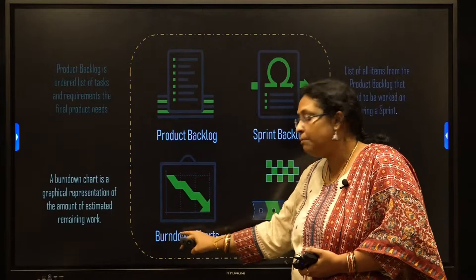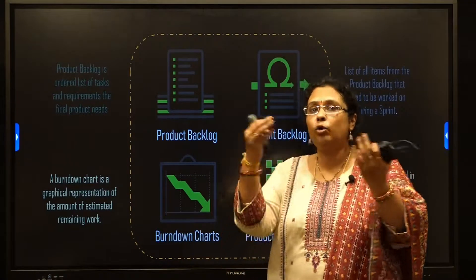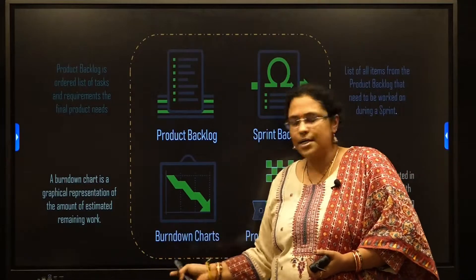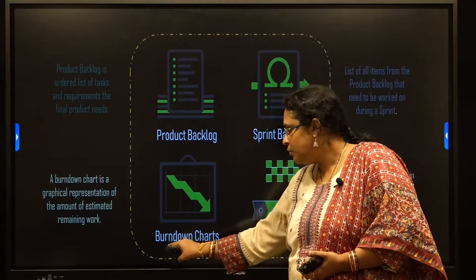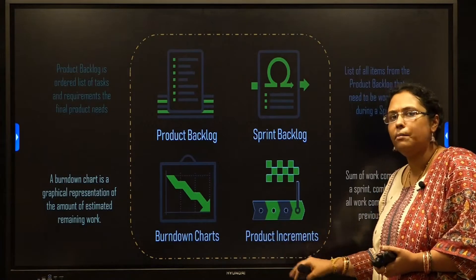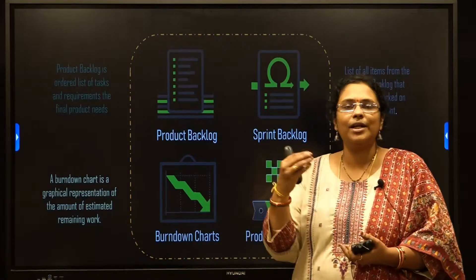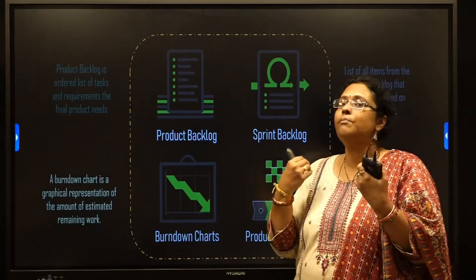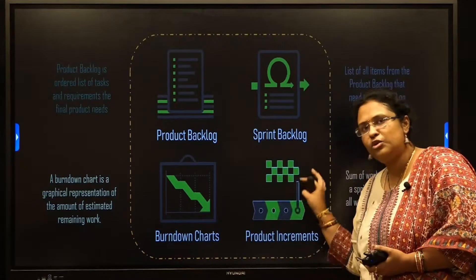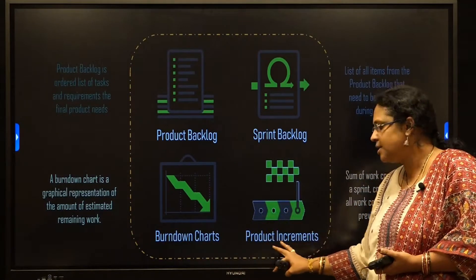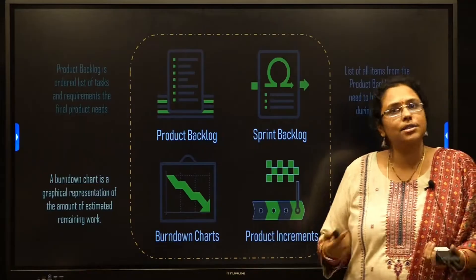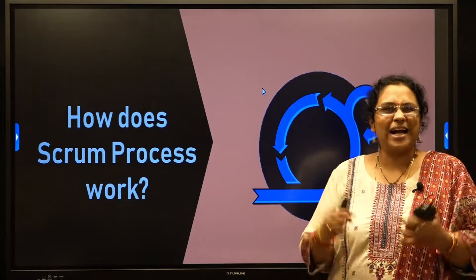The next artifact is the Burn Down Chart, a document giving a pictorial representation of how many requirements are developed, how many are pending, and how many are in progress within the sprint. After that you have the Product Increment, a folder or document containing all the increments after each sprint. After the first sprint a working product is placed here; after the second sprint, the second product is added and integration happens. These are the four main artifacts used in the Scrum framework.